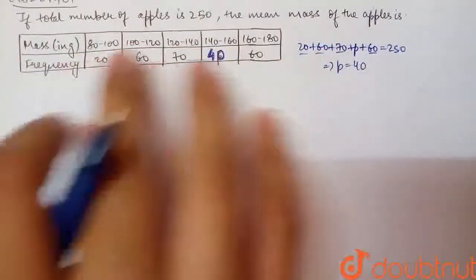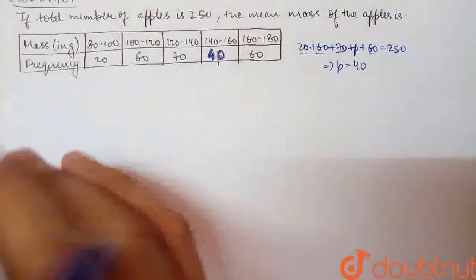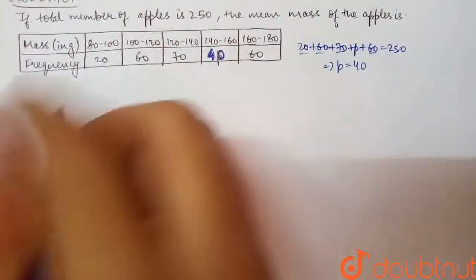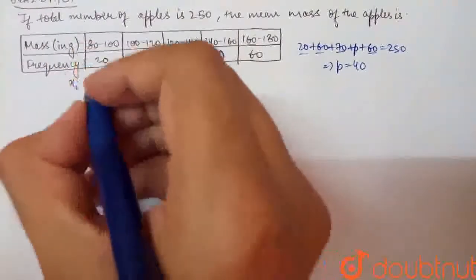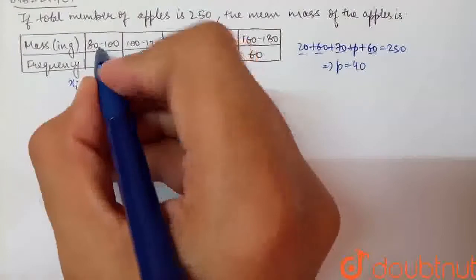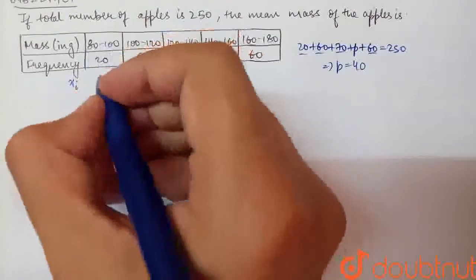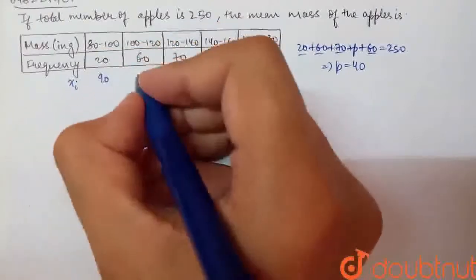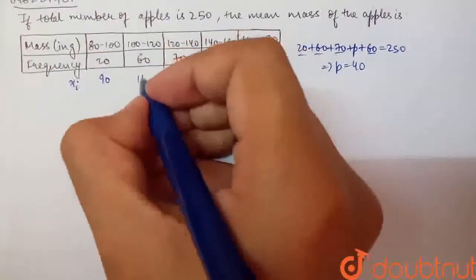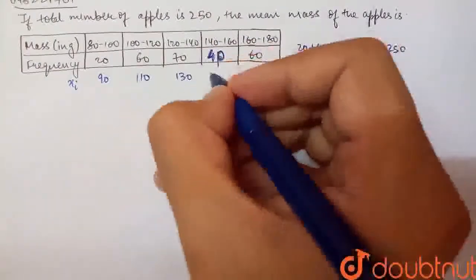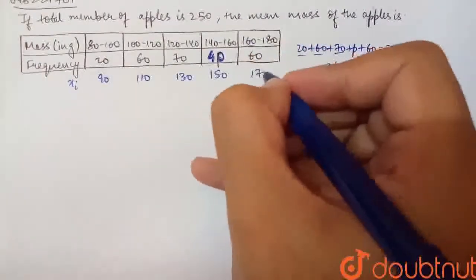Basically, the frequency is the total number of apples that are available. Now, the mean. How do we do that? The midpoint mark. So 80 and 100, the midpoint mark is 90, 80 plus 100 by 2. Then here 100 and 120, so 110, 130, 150 and 170.